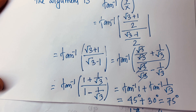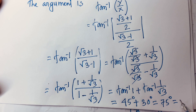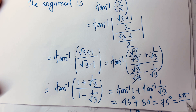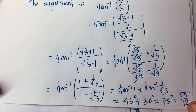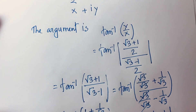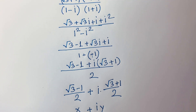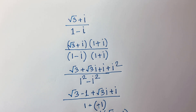So 45 plus 30 is 75 degrees, which is 5π/12. This is our final answer. Thank you all. If you enjoy this video, please subscribe to my channel and like this video. Goodbye.